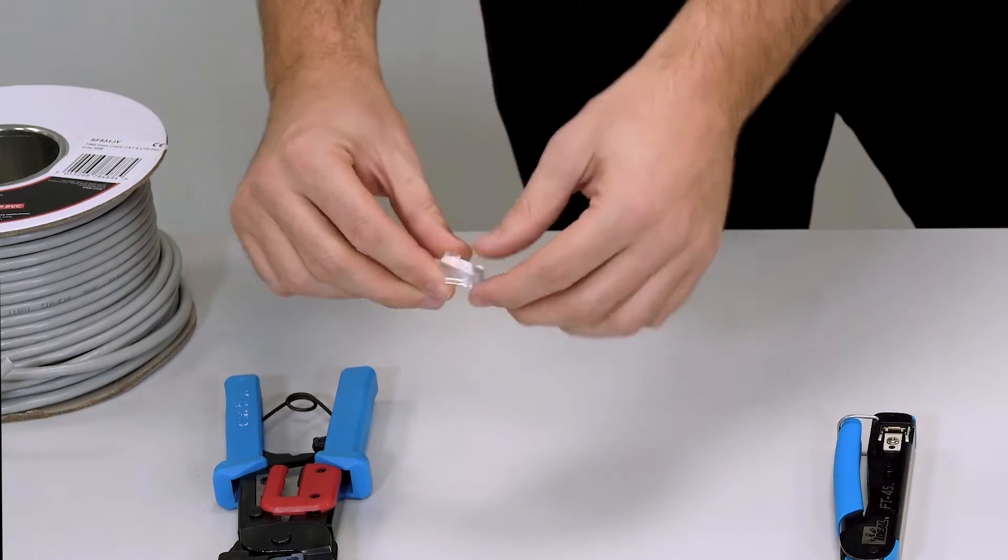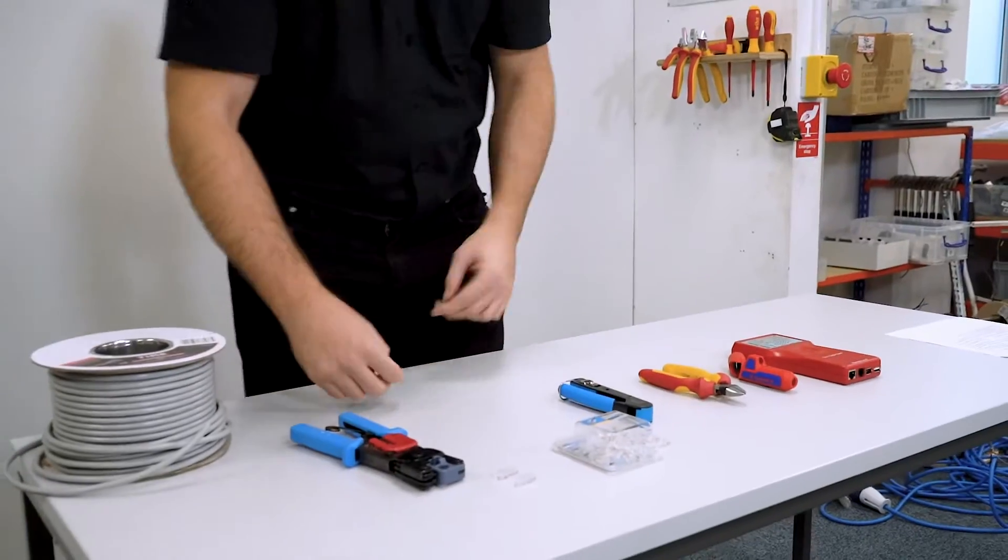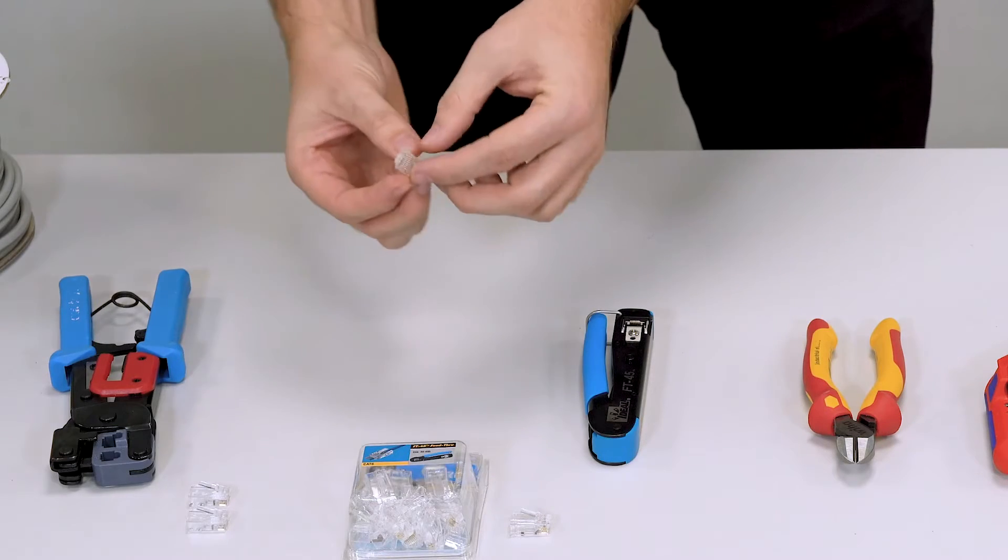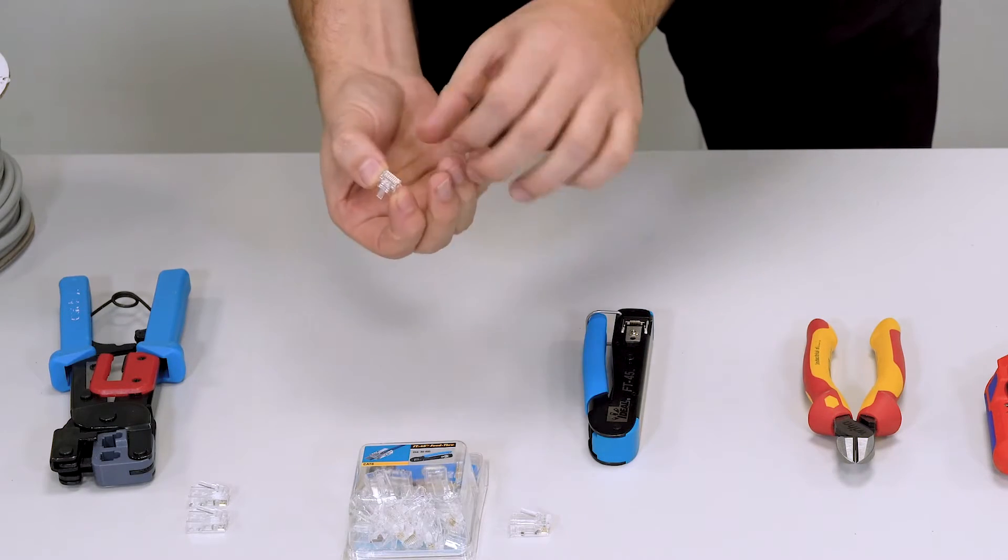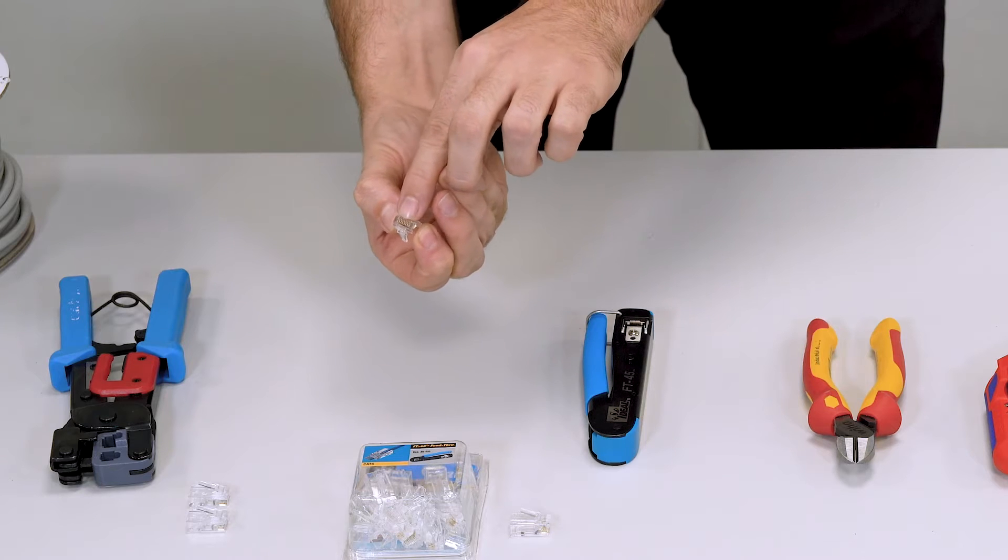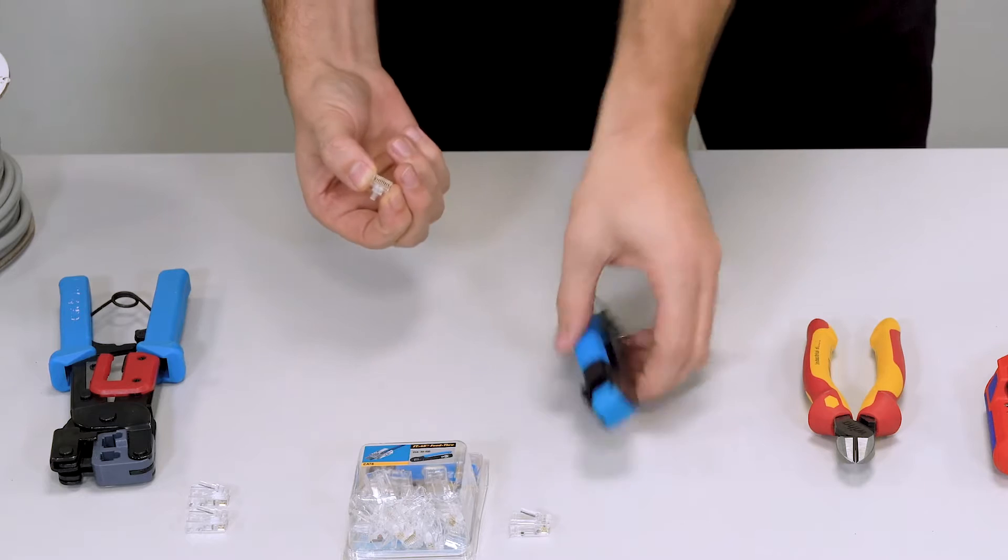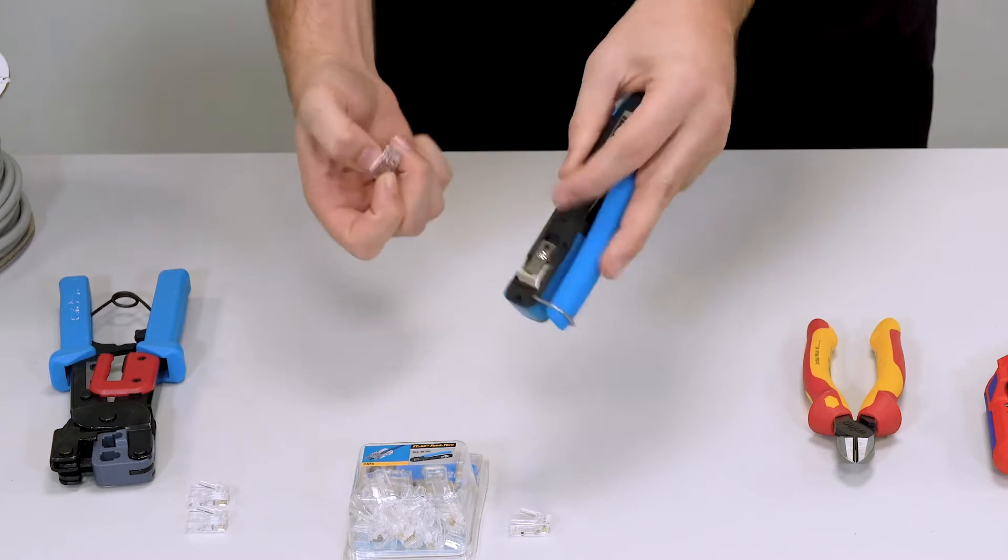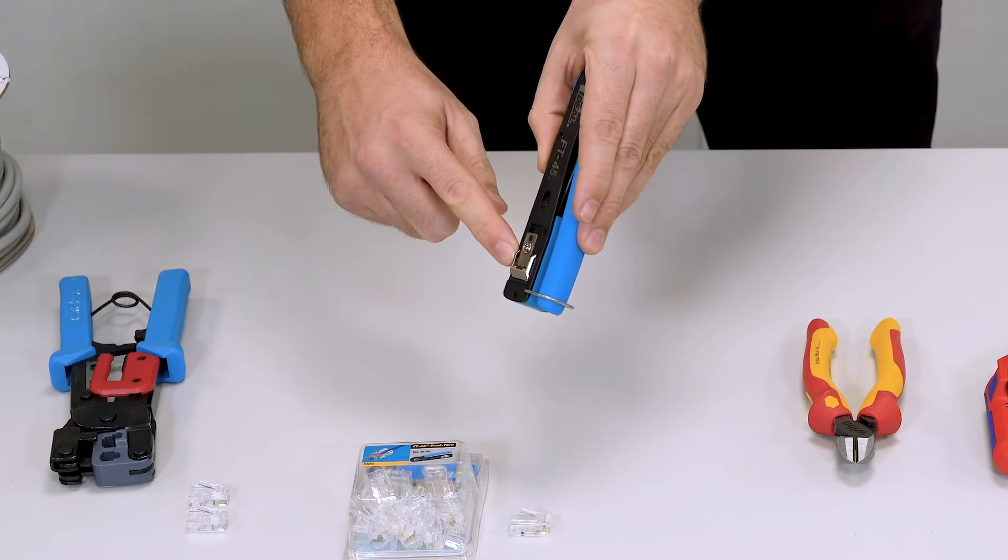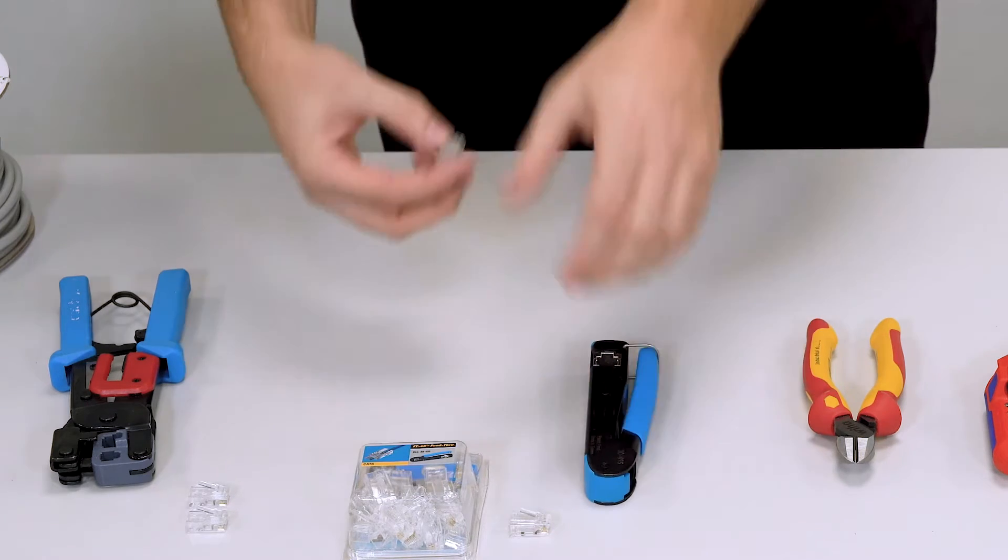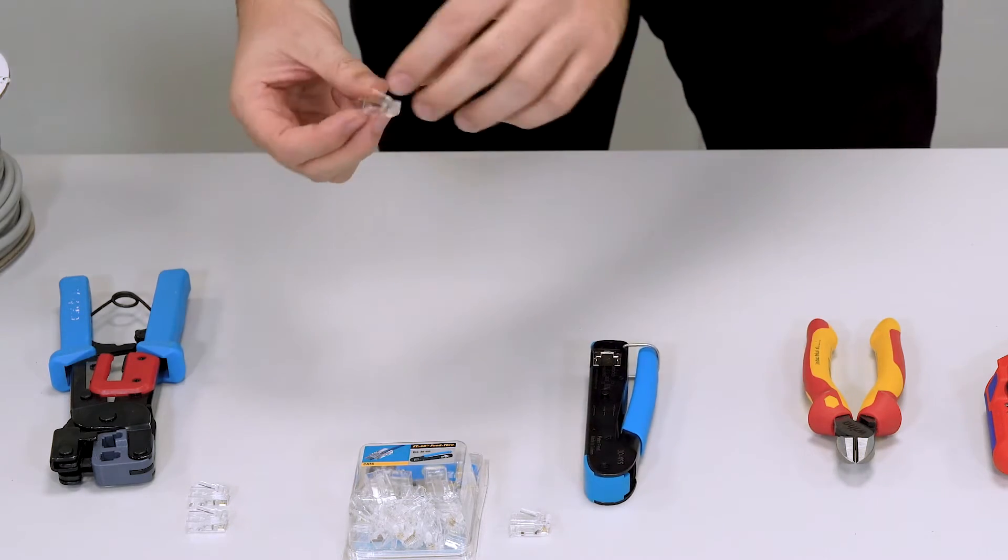So what we are going to show you is this other type of connector. Now these are push-through connectors. The difference between the two is this actually allows the cable to come through, and when you crimp with this crimping tool, it actually cuts the cables flush. So you can check that the pairs are the right way around before you actually make that cut. We're going to look at both those methods today.